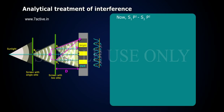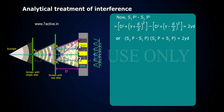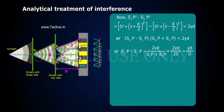S1P squared minus S2P squared equals D squared plus (Y + D/2) squared minus D squared plus (Y - D/2) squared. S2P plus S1P equals 2YD, so S2P minus S1P equals 2YD divided by (S1P + S2P), which gives S2P minus S1P equals 2YD by D.